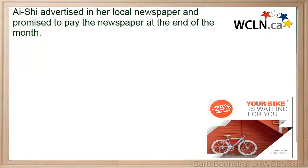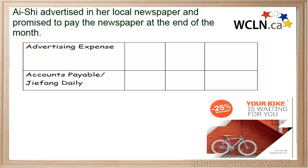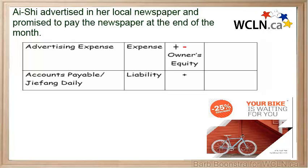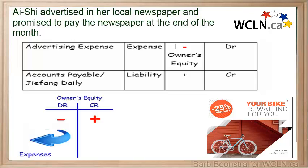Now let's look at an expense transaction. Ashi advertised in her local newspaper and promised to pay the newspaper at the end of the month. The two accounts affected are Advertising Expense and Accounts Payable. Advertising Expense is an expense account and Accounts Payable is a liability account. Advertising Expense is increasing, but remember that this will decrease owner's equity. Accounts Payable is also increasing. Advertising Expense increases on the debit side and Accounts Payable increases on the credit side.